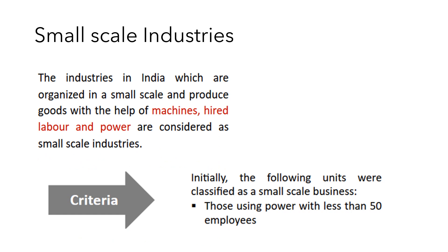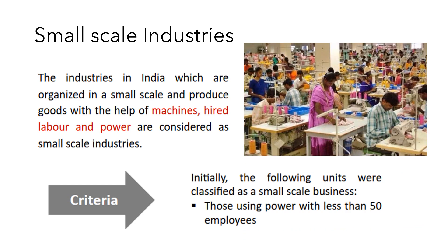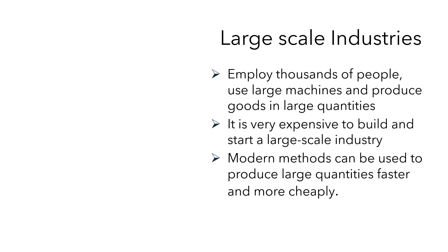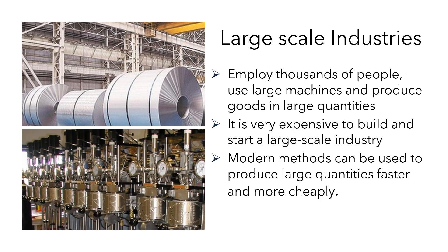Small scale industries produce goods with the help of machines, hired labor and power, with fewer than 50 employees, which can extend up to 100. Large scale industries employ thousands of people, use large machines and produce goods in larger quantities. They are very expensive to build and start, but modern methods allow large quantities to be produced faster and more cheaply.